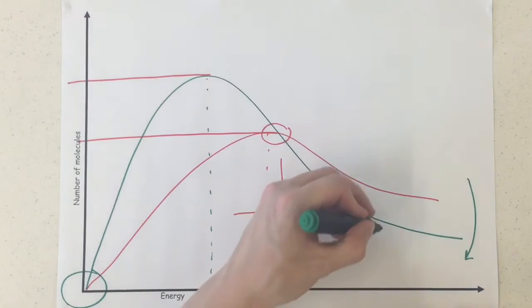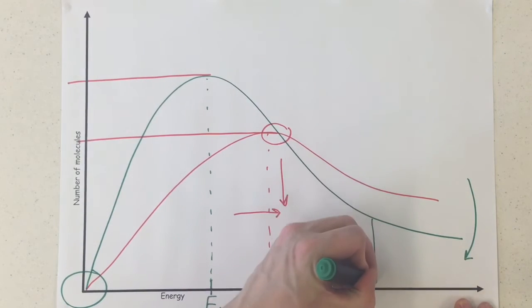Now the biggest thing that we need to notice is when we had our original curve, down here, I'd say roughly there on this one, we actually have our activation energy.